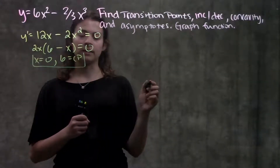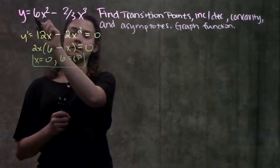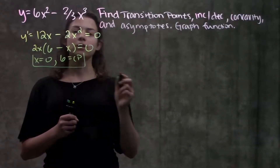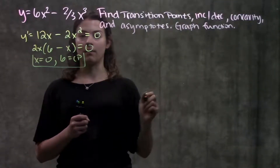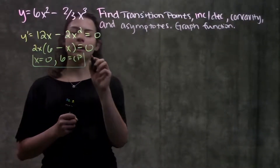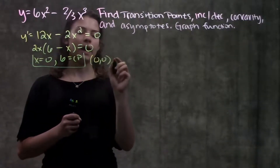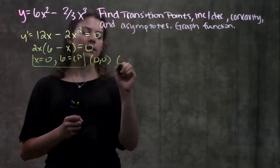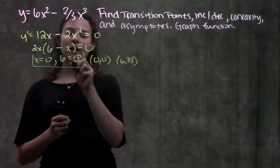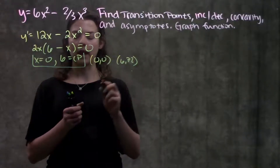Since I know I'm going to be sketching this graph later, I'm going to go ahead and plug these critical points into my original function so that I have actual points to plot on my graph. When I plug zero in I get one point, and when I plug 6 in I get another point. So I have my critical points and some points I can plot on my graph.